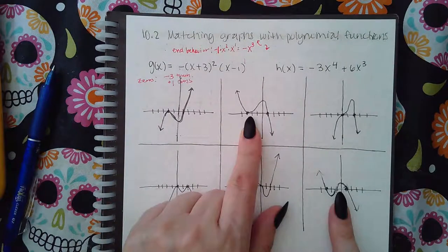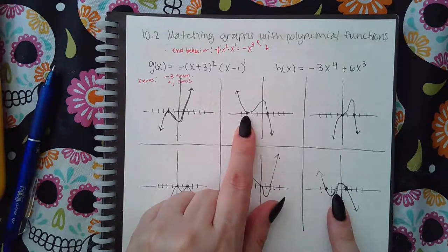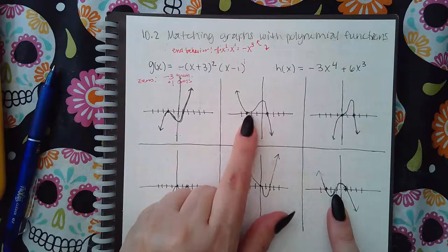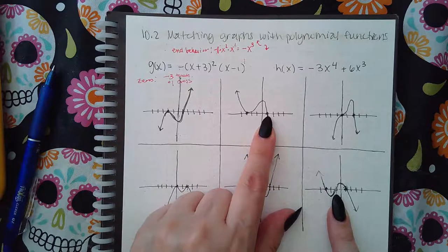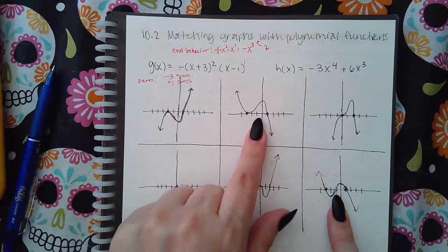So between these two graphs, which ones do that? Well, this one has an x-intercept of negative three, and it just touches it, and then bounces off. And it has an x-intercept of one, and it goes right through. So this one is matching the information we have.